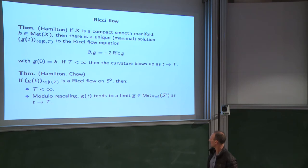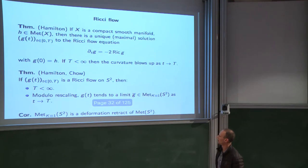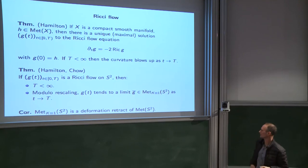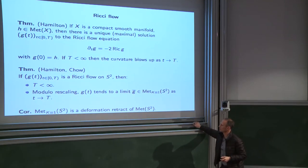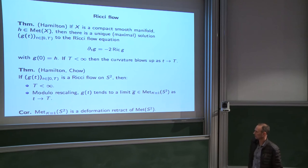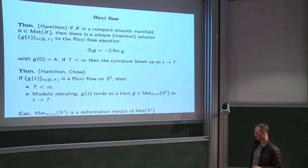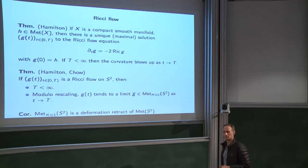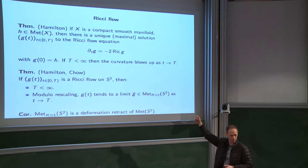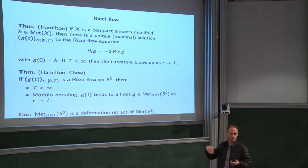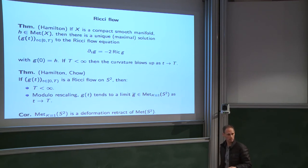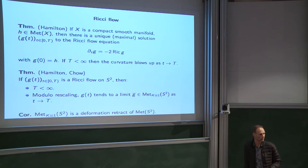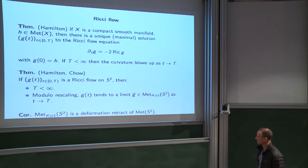That gives us a metric G-bar. As a corollary, the space of curvature-1 metrics is a deformation retract of the space of all metrics. You take any metric, deform it to a metric with constant curvature. Something must be checked: you need to make sure this process depends continuously on the initial condition, but that follows in a straightforward way from the proofs, since you have uniform exponential decay of curvature and its derivatives. So that takes care of the two-sphere.